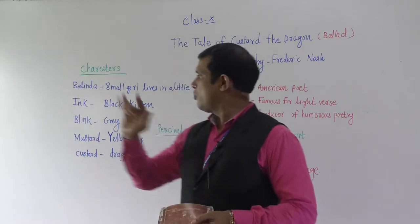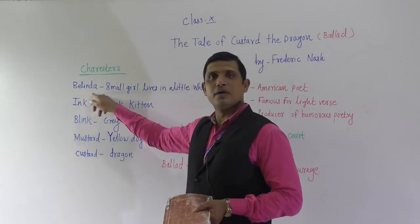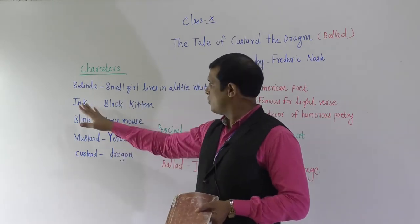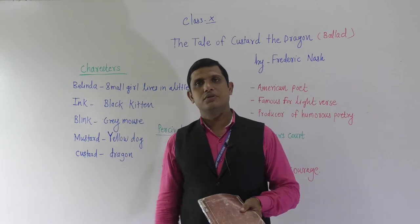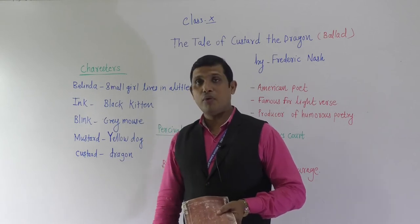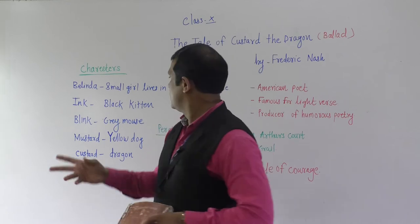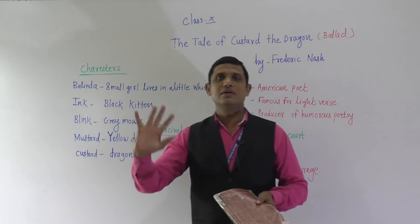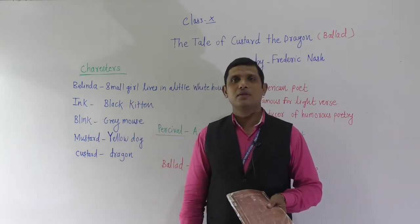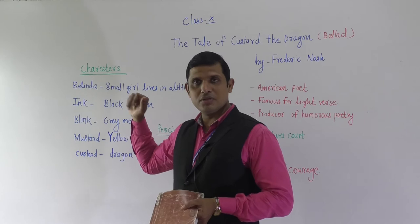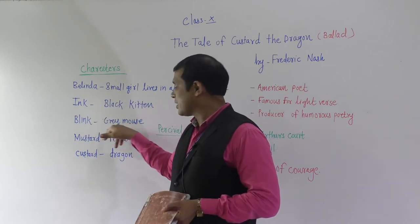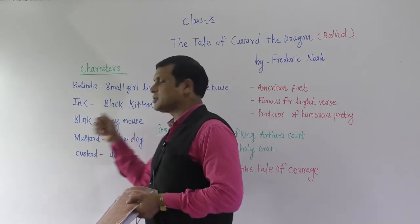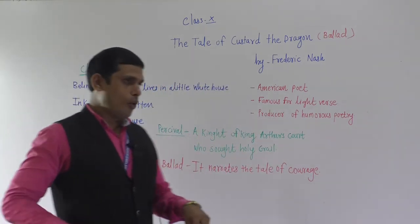In this poem we are going to learn four characters. Belinda is a very small girl who lives in a little white house. She has four pets: Ink, Blink, Mustard, and Custard. The poet has very nicely chosen these names. Ink is a black kitten, Blink is a gray mouse, Mustard is a yellow dog, and Custard is a dragon.